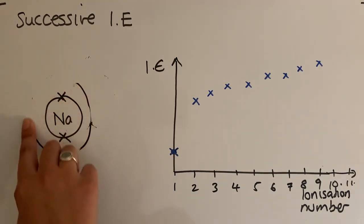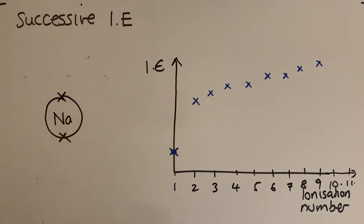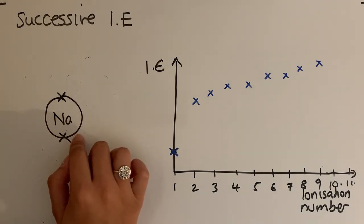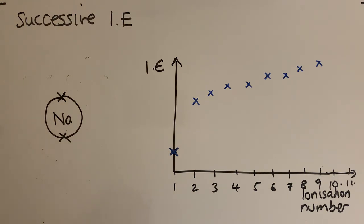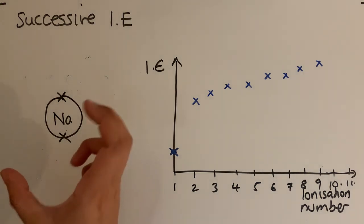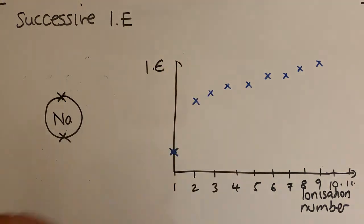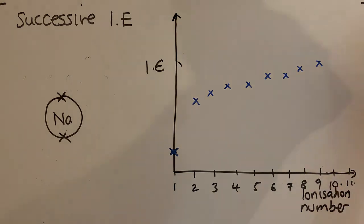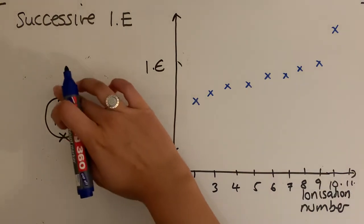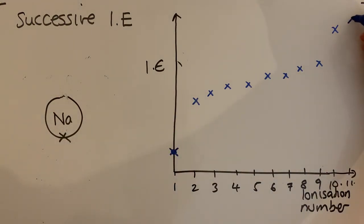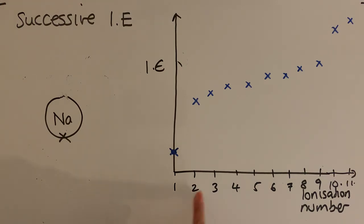After removing all eight electrons from the second shell, there is another very large jump between the ninth and tenth ionization energy, as we move to the first shell. Those final two electrons are closest to the nucleus with no electron shielding, so the nuclear attraction is greatest and the ionic radius smallest. The jump between the 1st and 2nd IE and between the 9th and 10th IE show transitions between shells.